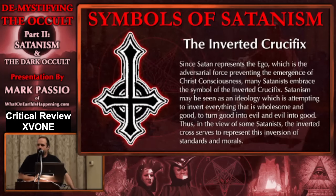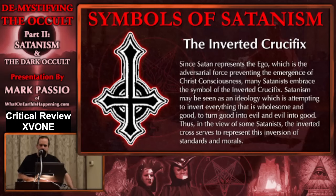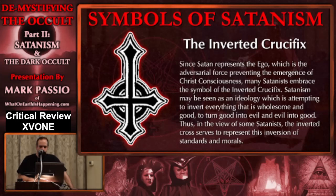Another well-known symbol of Satanism, especially among what you might call self-styled Satanists as opposed to organized network Satanists, is the inverted crucifix. This is very popular in Satanic music, especially death metal and black metal. Since Satan represents the ego — the adversarial force preventing the emergence of Christ consciousness — many Satanists embrace the symbol of the inverted crucifix.